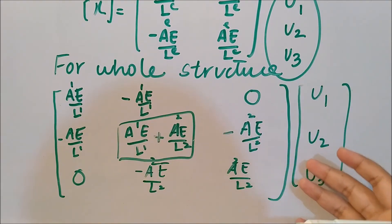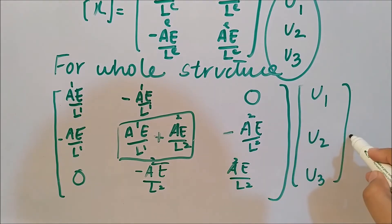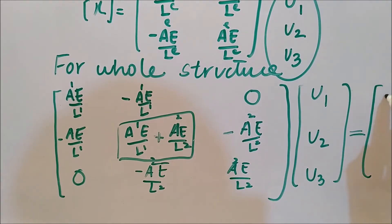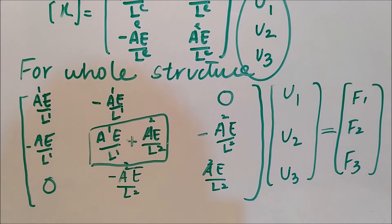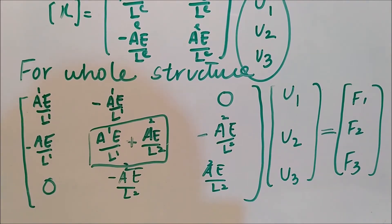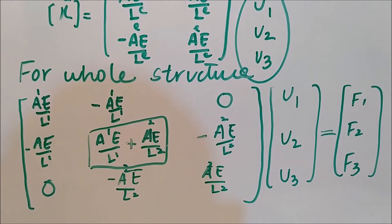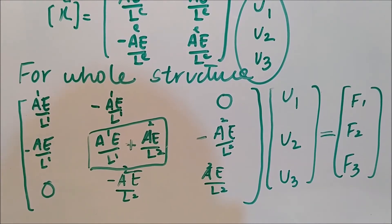This is the stiffness matrix for the whole structure. The nodal displacement vector contains u1, u2, and u3. The total load vector for the whole structure contains f1, f2, and f3. This completes the total assembly of elements, matrices, and vectors derived at the element level.